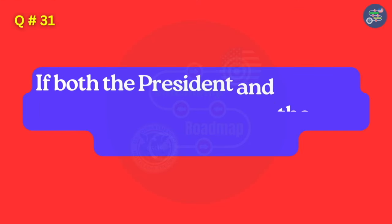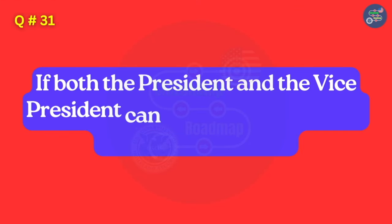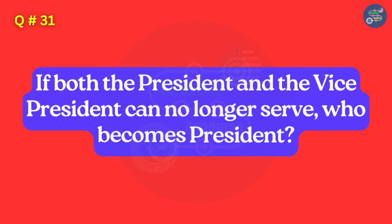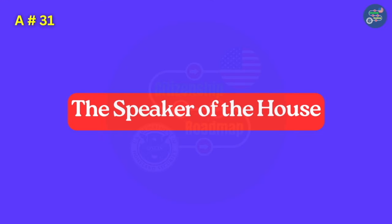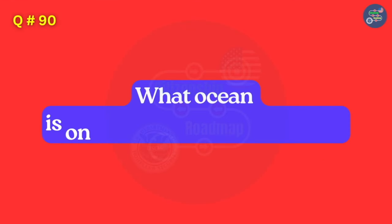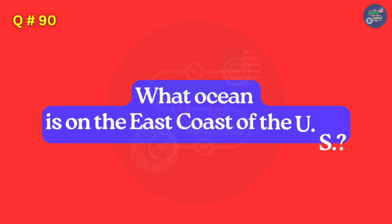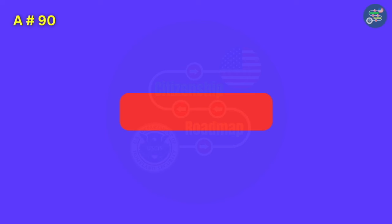If both the President and the Vice President can no longer serve, who becomes President? The Speaker of the House. What ocean is on the east coast of the United States? Atlantic Ocean.